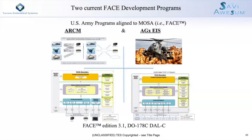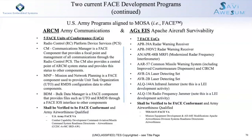Arkham is the Army's comms domain and it's shared comms across the aircraft, and AGX is the domain for aircraft survivability, initially focused on the Apache aircraft. Side by side, we have five FACE UOCs for Arkham and seven FACE UOCs for the AGX EIS. Both of these programs will be verified to be FACE conformant and run through airworthiness. We've got the Army FACE VA on the left and the TES Savvy FACE VA on the right.